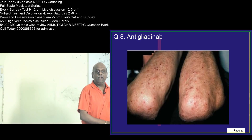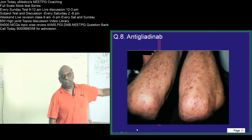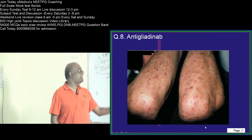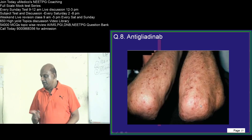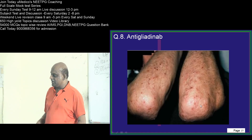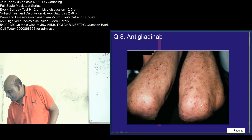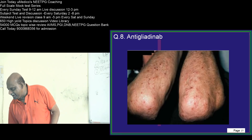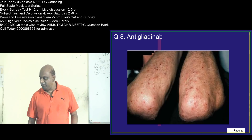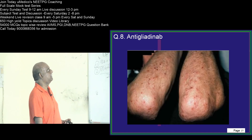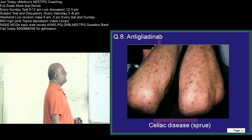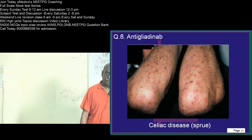Anti-gliadin antibody — you are seeing this here. Easy question, question number 8. Use number 8 and punch your answer. Where do you find the anti-gliadin antibody? Very good — Shah Huzafi and Amir Farooq, you are all right. It is celiac sprue.